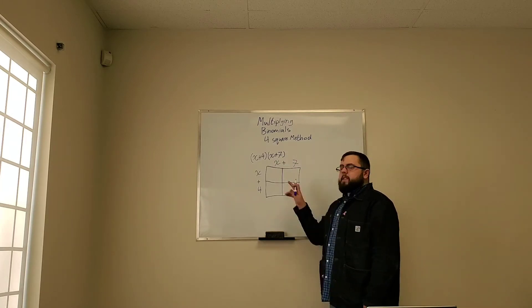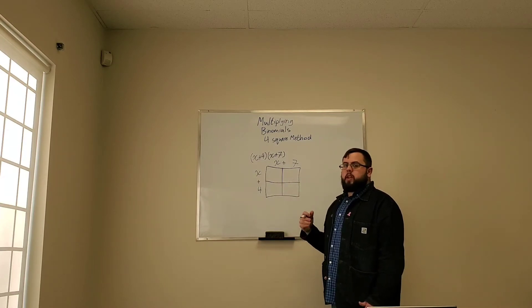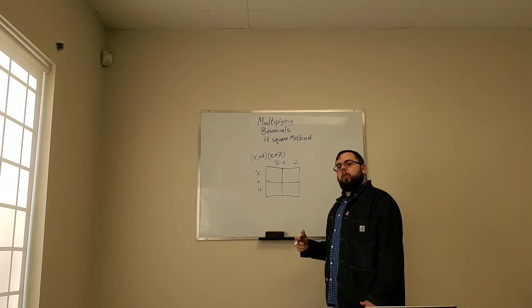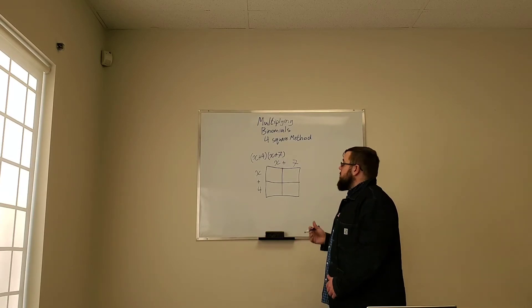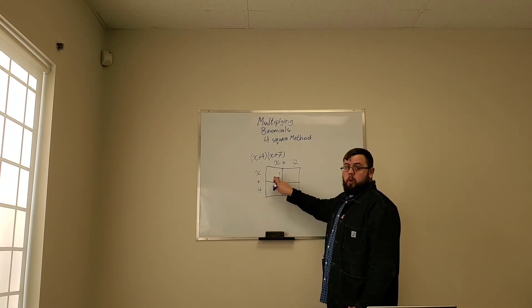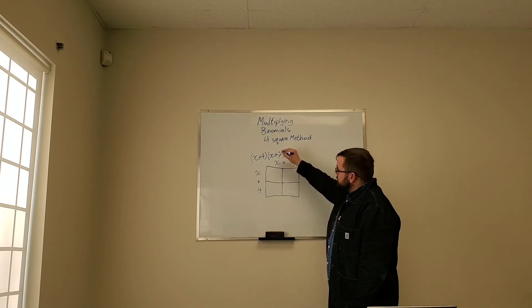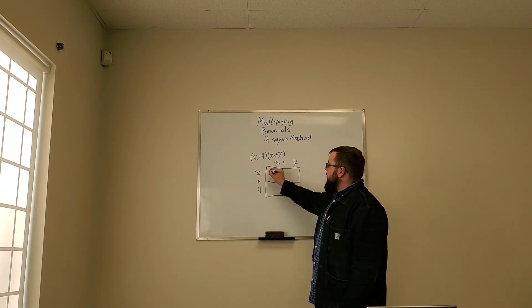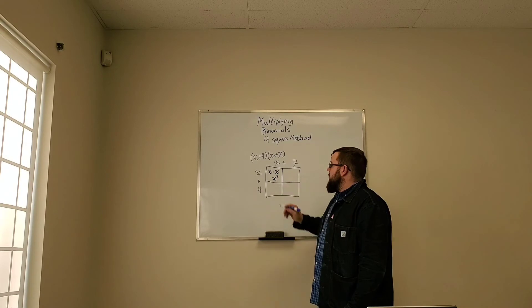Now inside each of these squares, we are going to look at the intersection between the row and the column. And we're going to multiply those two pieces together. So if we look at this first top left corner, we will see that that's the x row, the x column. So we have x times x, which gives us x squared.